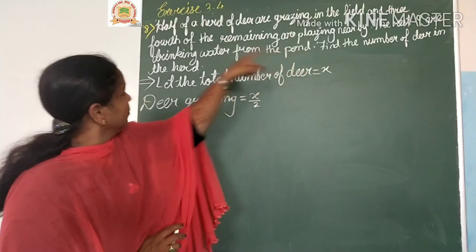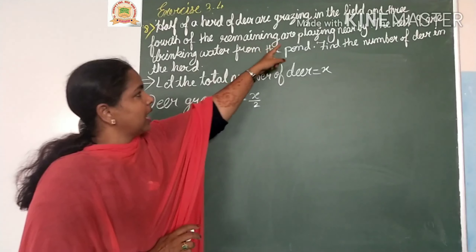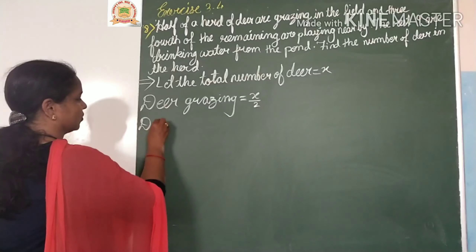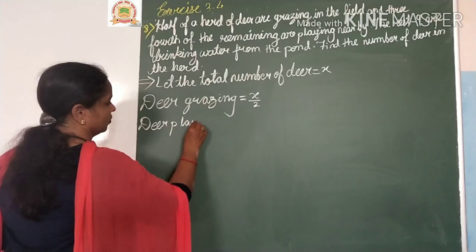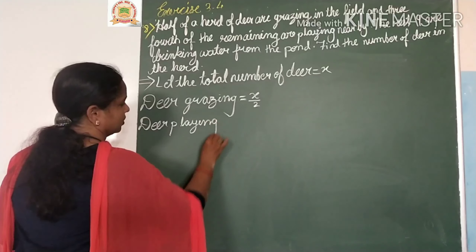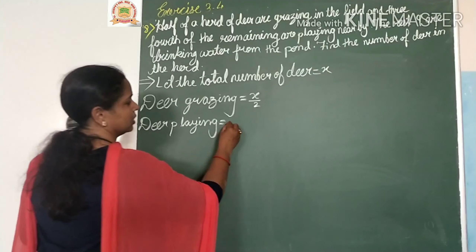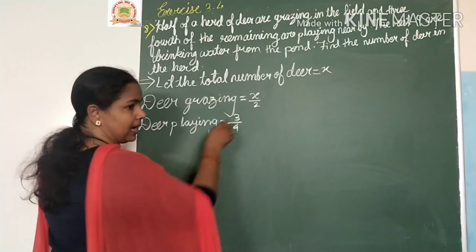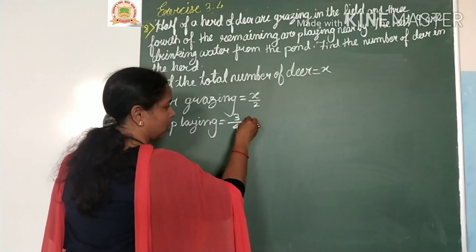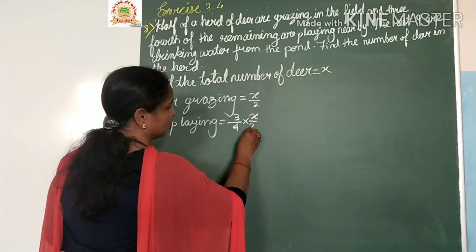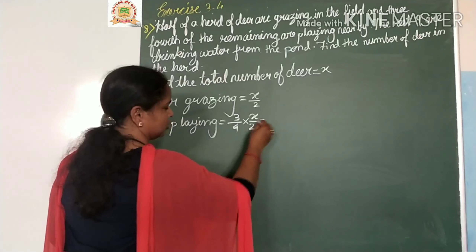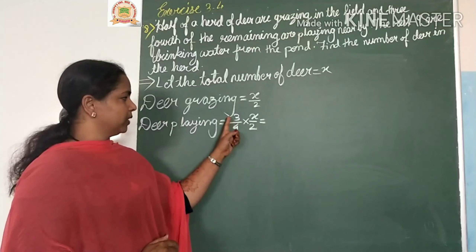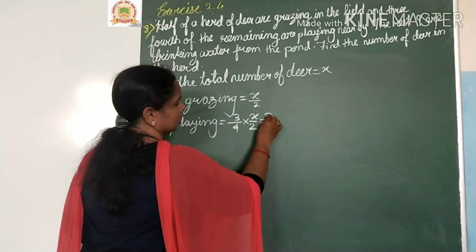Three-fourths of the remaining are playing nearby, so deer playing is equal to three-fourths of the remaining x by 2. We multiply numerator to numerator and denominator to denominator: 3 into x is 3x.